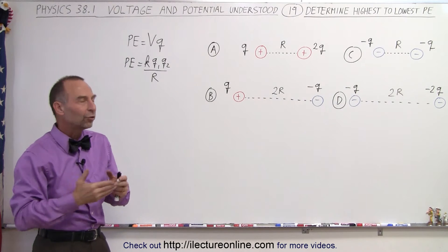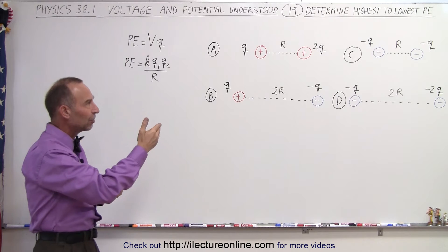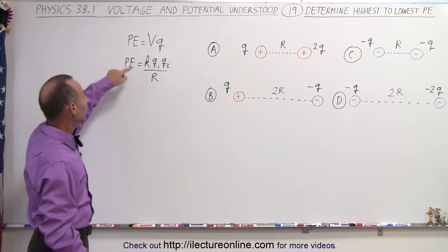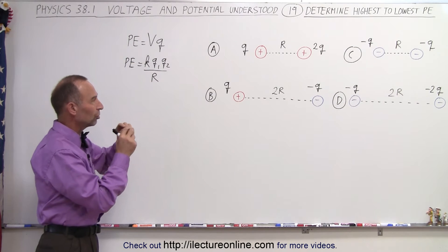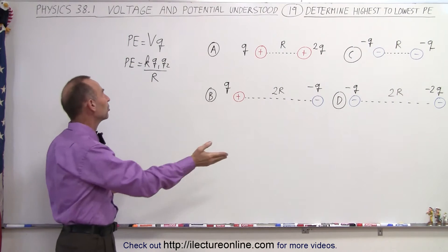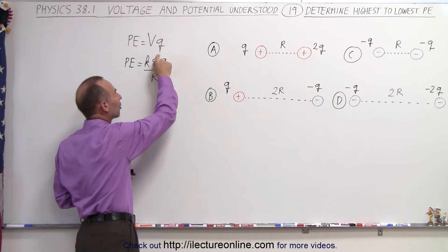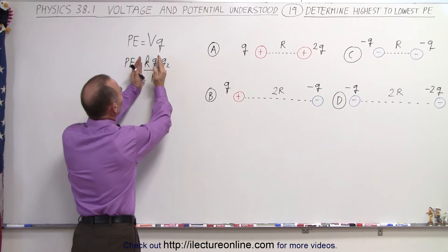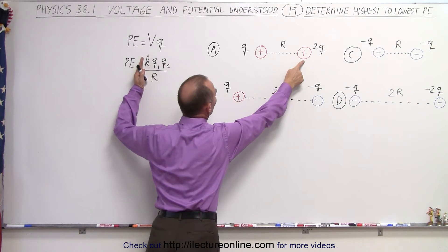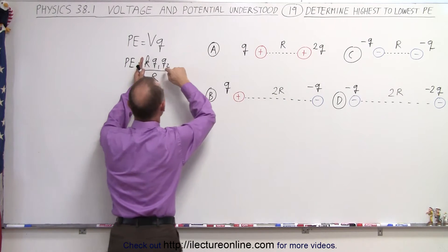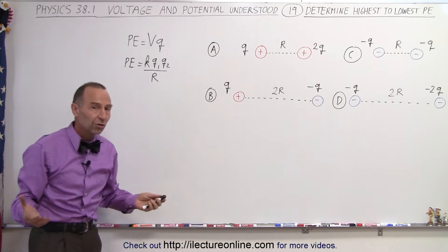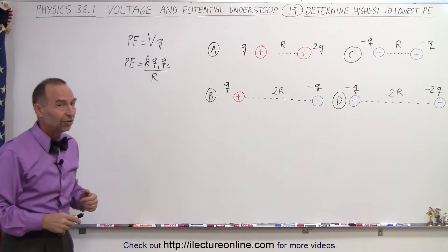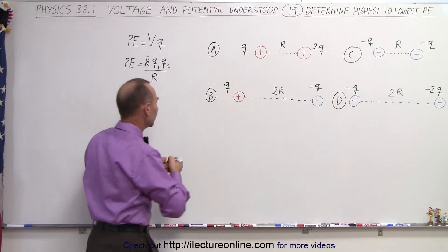We're trying to figure out what the order is from the highest to the lowest potential energy between these four situations. And the potential energy can be calculated by taking the potential created by the one charge and multiplying it by the value of the charge as the second charge, which means we have KQ1 over R. That would be the voltage created by the first charge at the distance, the location where the second charge is going to be placed. So all we have to do is multiply KQ1 Q2 divided by R for all four situations and see which one is the biggest. So let's start with A.